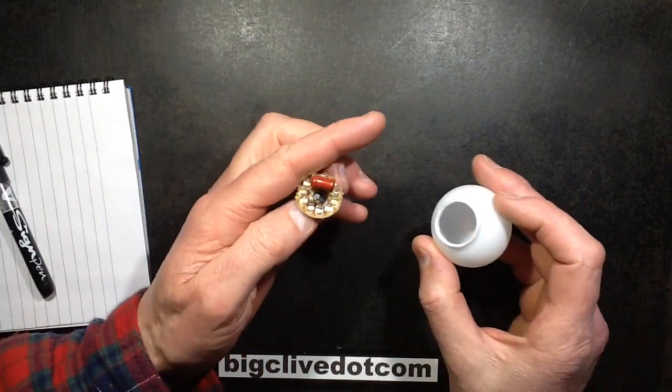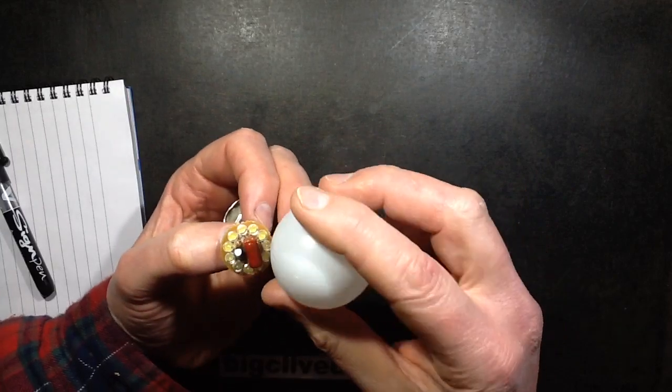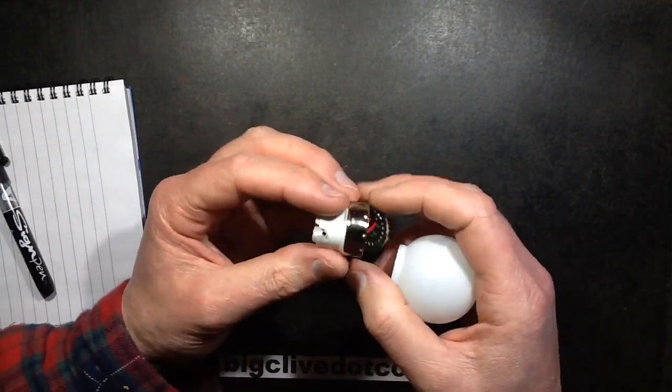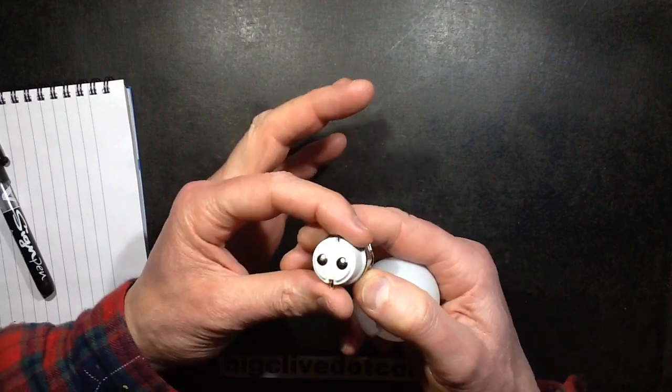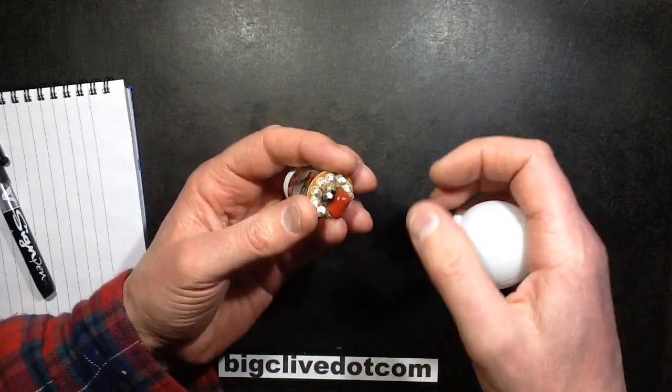It's time for another sudden schematic and you guys might recall that I did a look inside some festoon type LED lamps. I got another one from a different supplier which had the bayonet cap base instead of the Edison screw and when I plugged it in I thought this is just going to have the same circuitry.